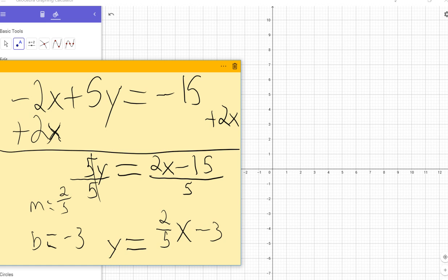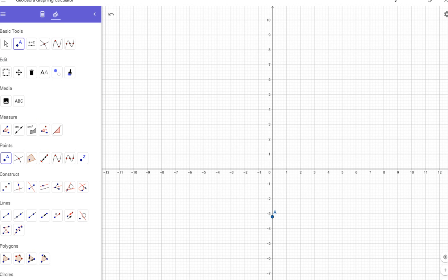So we're going to put a point on the y-axis here at negative 3. Right there. And then the m value is 2 over 5. Rise 2, run 5. There's your next point. There we go. And now we're just going to put a line.